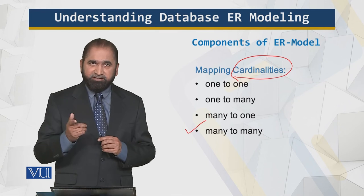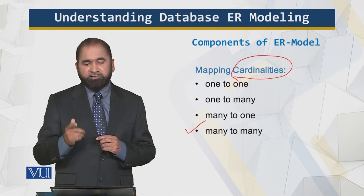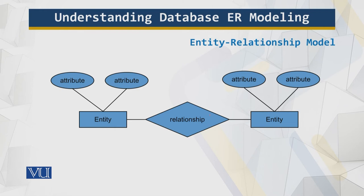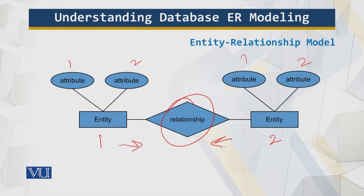So, we have the entity, we have the attributes, and we have cardinality relationships in an ER model. When we tie all these things together, we get this diagram. We have entity one and entity two — entity one has attribute one and attribute two, and entity two also has attribute one and attribute two. There is a relationship which ties together these entities. I can assign values to these attributes and entities — for example, the name is an attribute, the gender is an attribute, and the course is an entity with its own attributes.